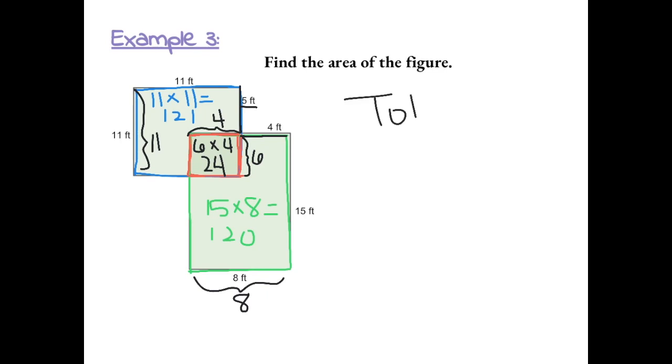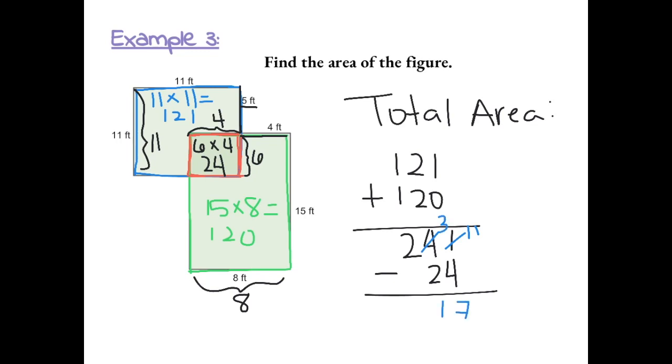Let's find the total area of the figure. First, we want to add the blue square, which has an area of 121, plus the green rectangle, which is 120. This gives us 241. And then we want to subtract the area of the red square one time, which is 24, so that it's not double counted. So this becomes 11, and this becomes a 3, so we get 217. The total area of the shaded region is 217 feet squared.